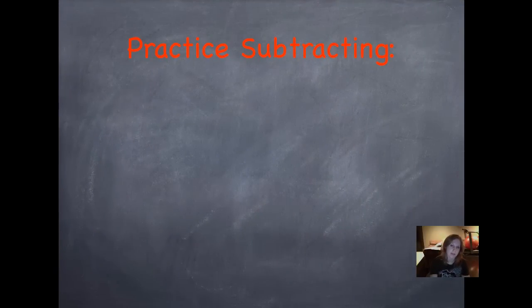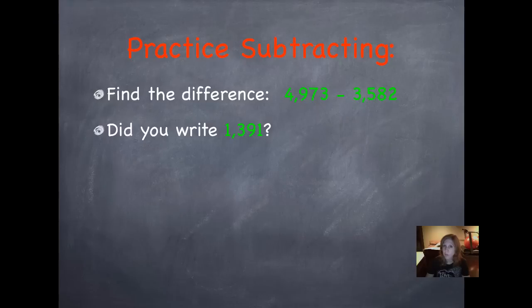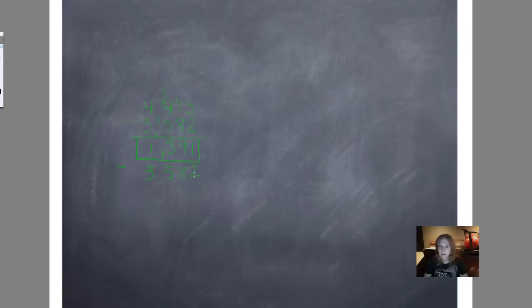Now we're going to do some practice subtracting. Find the difference — remember, difference means that you're subtracting — 4,973 minus 3,582. Did you write 1,391? Beginning in the ones place: 3 minus 2 is 1. 7 minus 8 can't do it; 17 minus 8 is 9. 8 minus 5 is 3. 4 minus 3 is 1. That's our final answer. Using our checking strategy, we add because we're using the opposite operation: 1 plus 2 is 3. 9 plus 8 is 17. 1 plus 3 is 4, and 4 and 5 are 9. And 1 plus 3 is 4. It should match the number we got at the top.